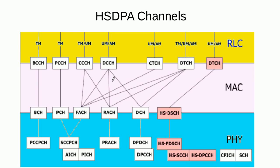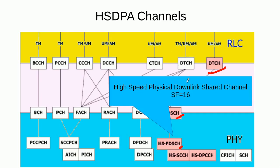To implement these new concepts, the new channels introduced in HSDPA are: a dedicated traffic channel (DTCH), the high speed downlink shared channel (HS-DSCH), which is the transport channel discussed earlier, and the high speed physical downlink shared channel (HS-PDSCH), which is the physical channel onto which the transport channel is mapped and which has a spreading factor of 16.